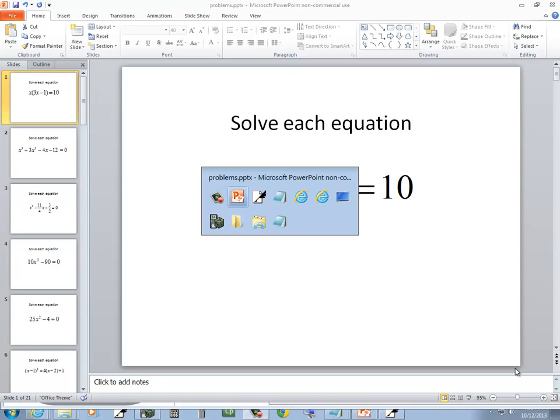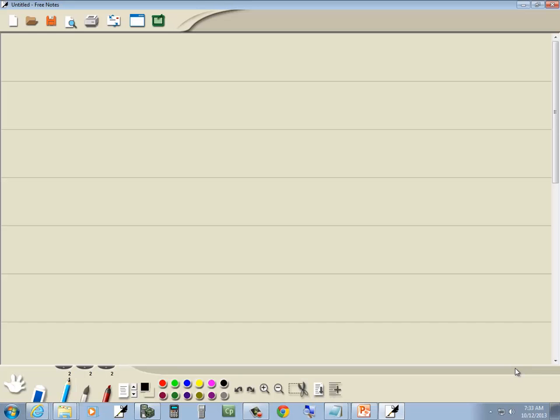In this problem, we want to solve this equation. We've got x times 3x minus 1 is equal to 10. Now, zero factor property. This looks like it's already factored, but there's a problem. There isn't zero on this side. So actually, what we need to do is get rid of the parentheses, get everything over one side, and get zero. So that's our first step. You have to get zero on one side.